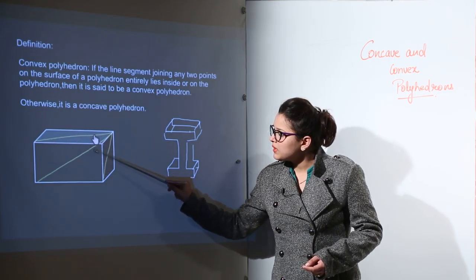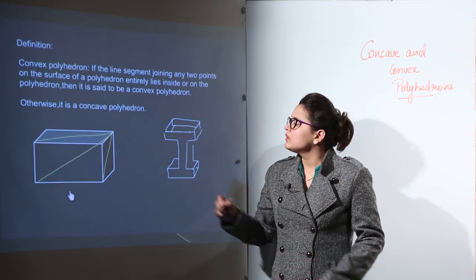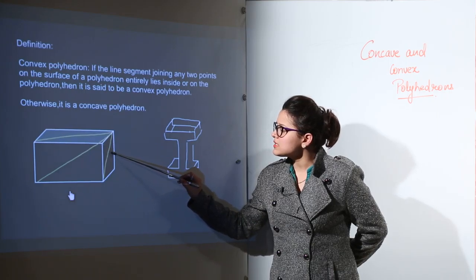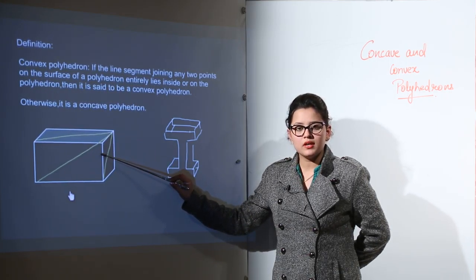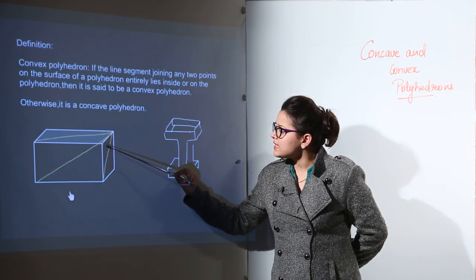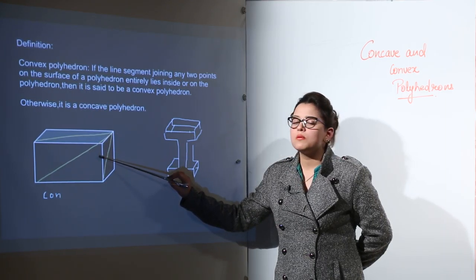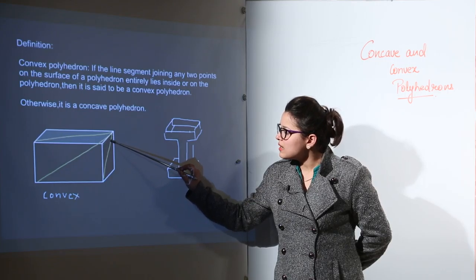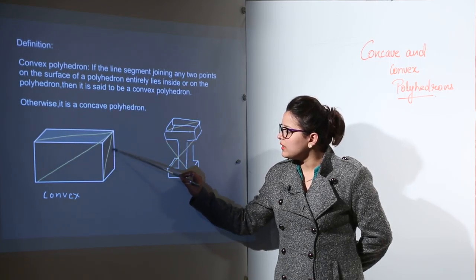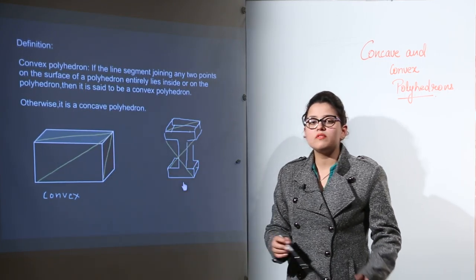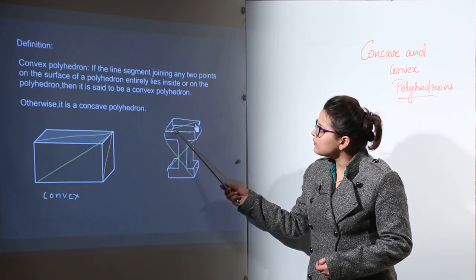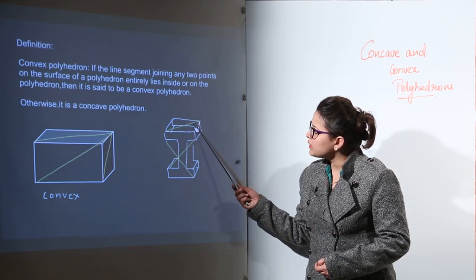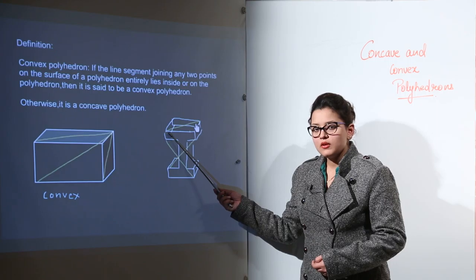We have taken two shapes — two polyhedrons. In the first one, we have a polyhedron in which we have already joined many vertices with three lines. All three line segments are joining two points on the polyhedron, and all the line segments are lying inside the polyhedron or on the polyhedron. So this is a convex polyhedron.